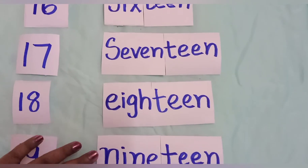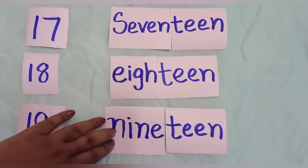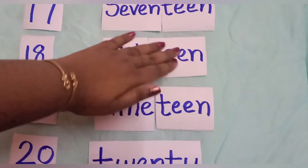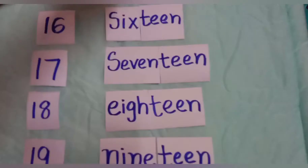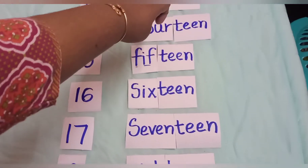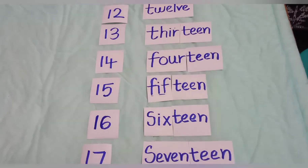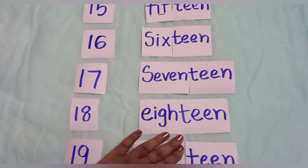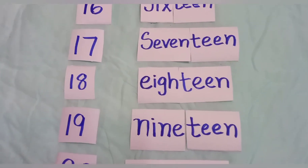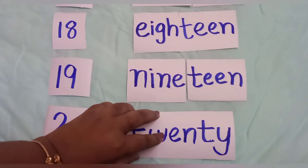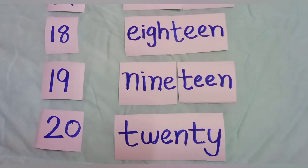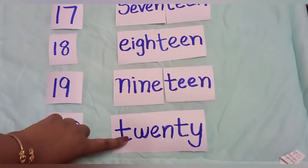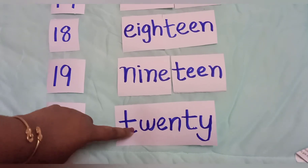Teen will come from 13 to 19, and you all can read it easily. The only thing you have to learn is 11, 12, and 20.